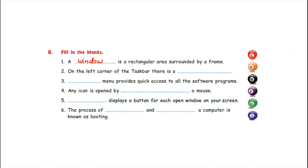Number two: on the left corner of the taskbar there is a dash — start button. So write here in the fill-up: start button. Number three: dash menu provides quick access to all the software programs — start menu. Write here in the fill-up: start. Start menu provides quick access to all the software programs.